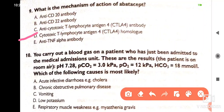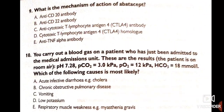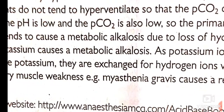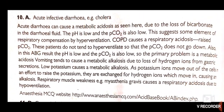A blood gas is carried out on a newly admitted patient on room air. Results: pH 7.28, pCO2 3, pO2 12, HCO3 18. The most likely cause is acute infective diarrhea, for example cholera. Acute diarrhea causes metabolic acidosis due to loss of bicarbonate in diarrheal fluid. The pH is low and pCO2 is also low, suggesting respiratory compensation by hyperventilation. COPD would cause a respiratory acidosis with raised pCO2.